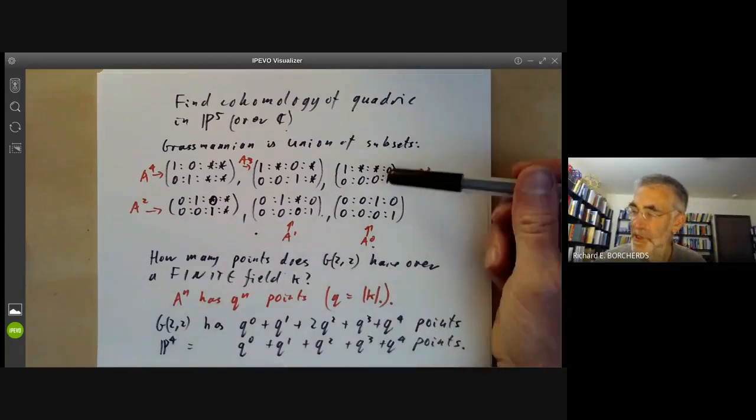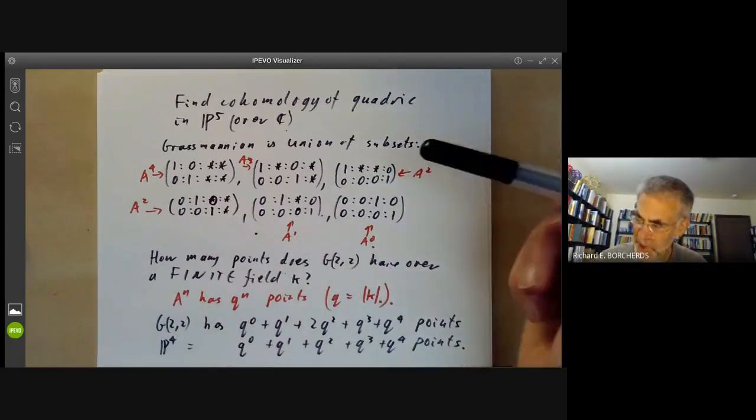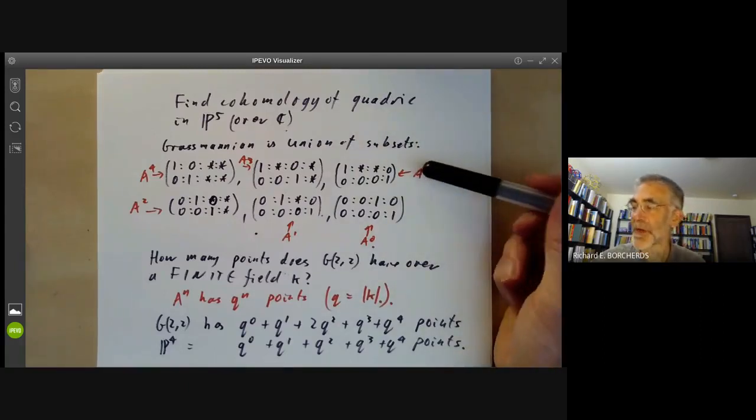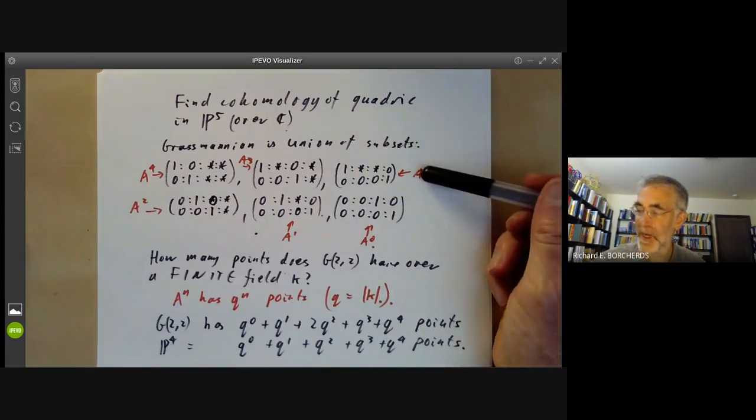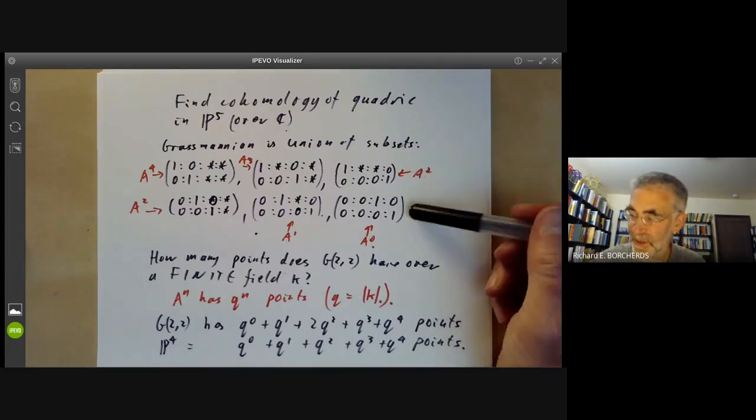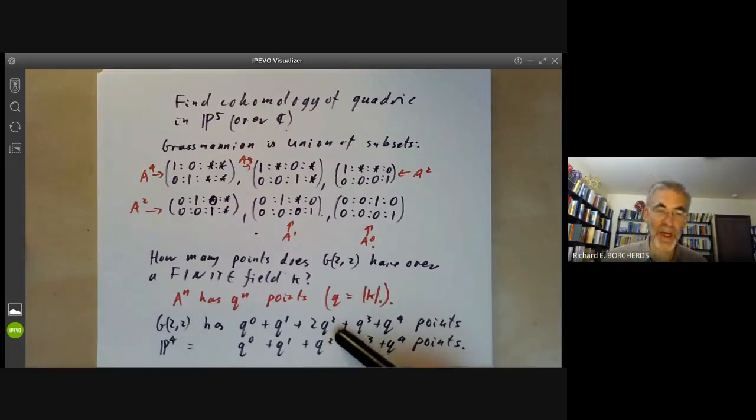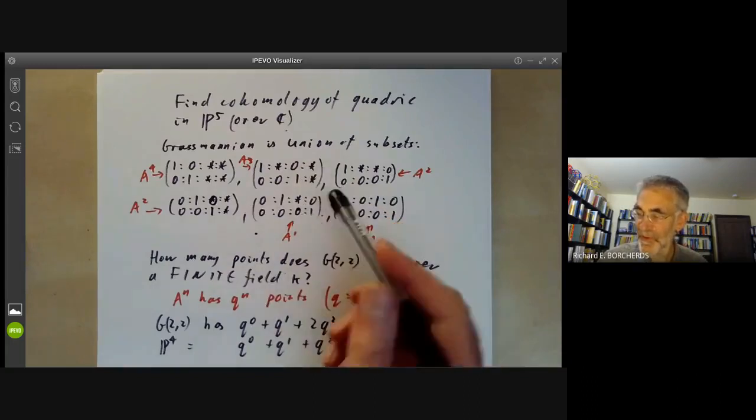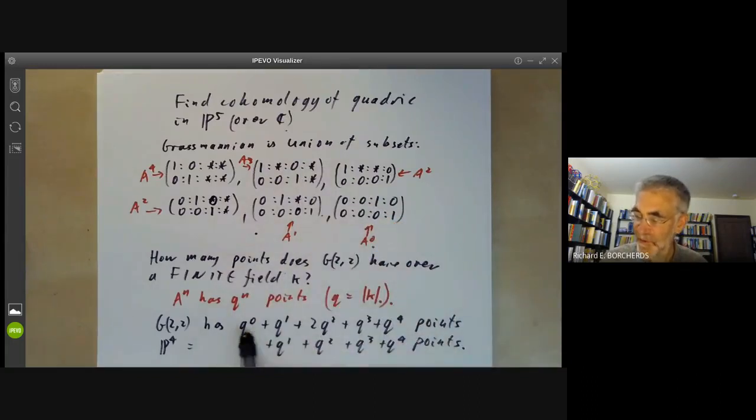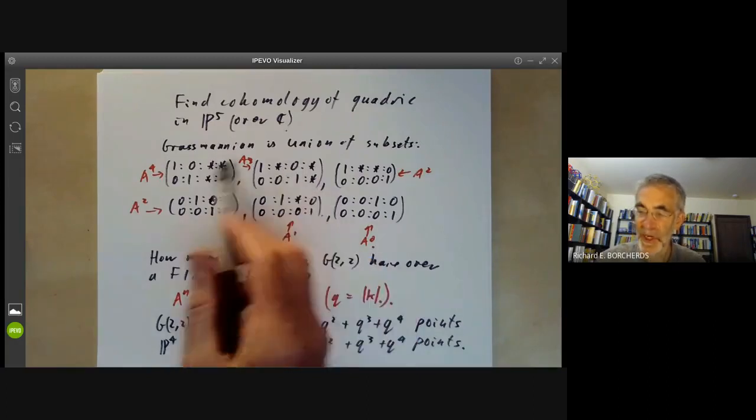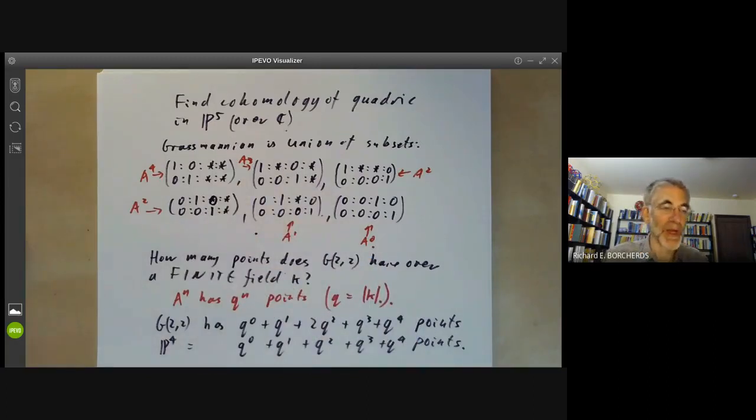Incidentally this relation between this strongly suggests there's some relation between the cohomology groups of a variety over the complex numbers and the number of points of the variety over a finite field. This is the theme of the Weil conjectures over finite fields which extend this to all varieties, basically saying the number of points of a variety over a finite field is closely related to its cohomology over the complex numbers.